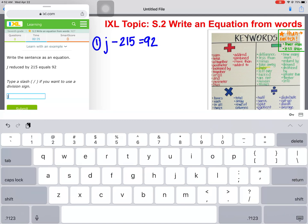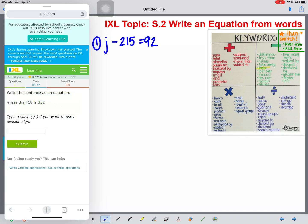And now we're going to type that in. So we're going to do J minus 215 equals 92. Very good.